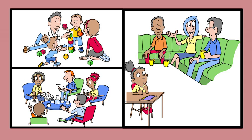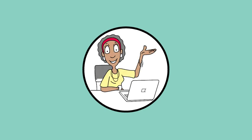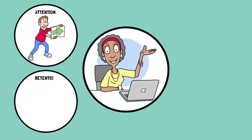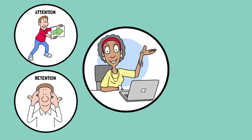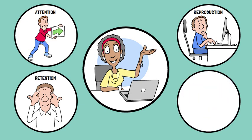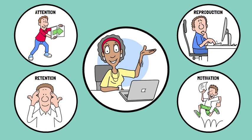Observational learning has four main processes: attention or noticing the model, retention or remembering what was observed, reproduction or recreating the observed behavior, and motivation or having a reason to imitate. These components collectively contribute to the effectiveness of observational learning.